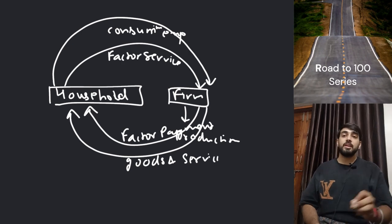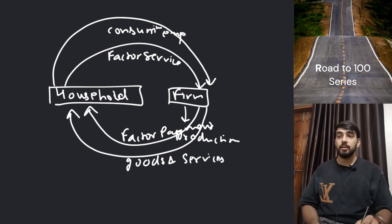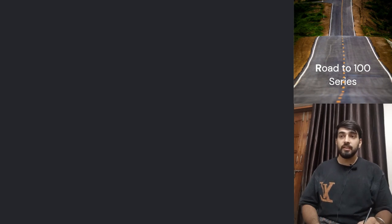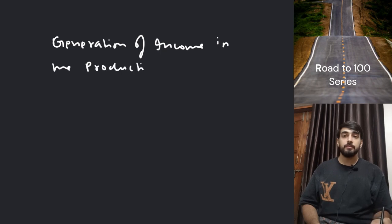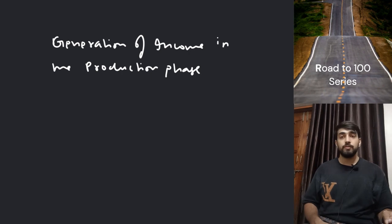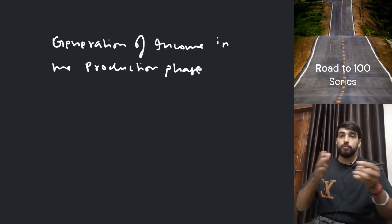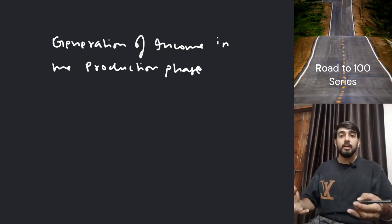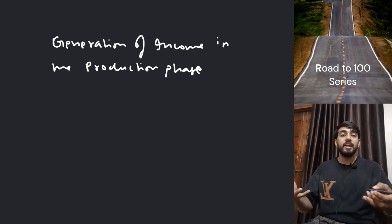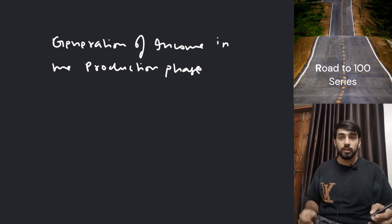So if we talk about a short definition of circular flow of income, the definition will be: basically, the generation of income by the firm in the production phase. The production phase is where household provides factor services to the firm, the firm makes proper use of those factor services, generates income there, produces something, and by selling that produce generates income. So generation of income happens in the production phase.